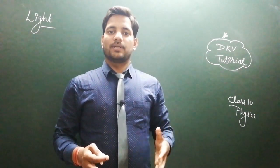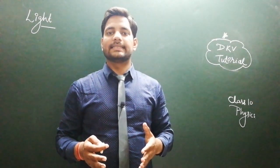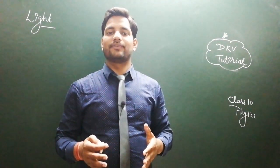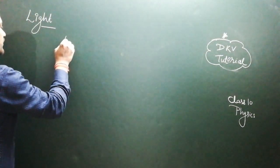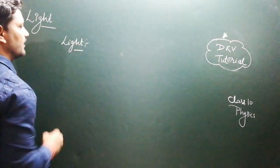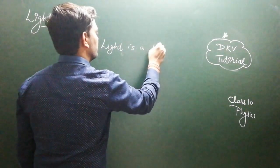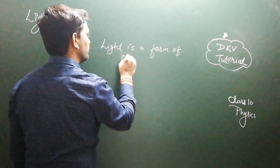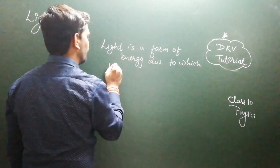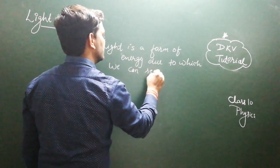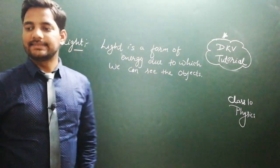As we all know, the biggest source of light in our universe is the Sun. The first question that arises is: what is light, and how can we see different things? So whenever anyone asks you what is light, your answer should be: light is a form of energy due to which we can see the objects.